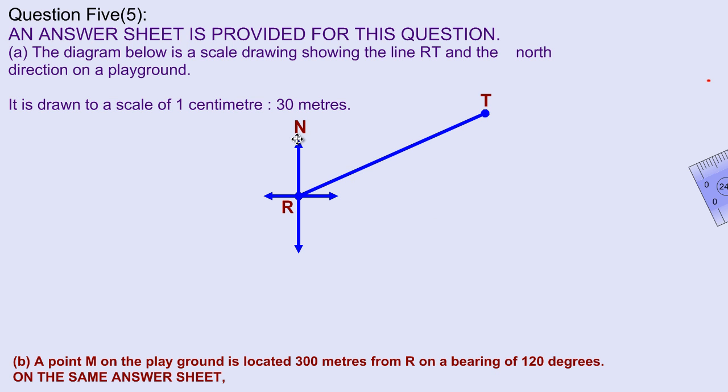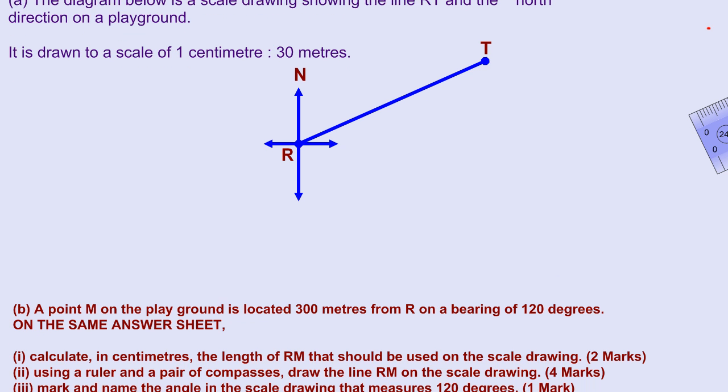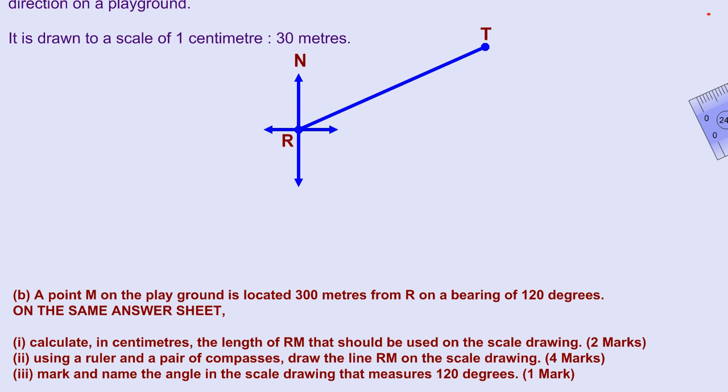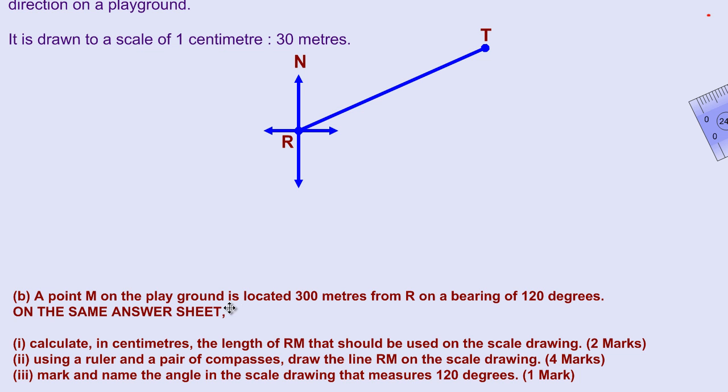Okay, my friends, in this video we're going to be completing question 5 part B. Here it states that in part B, let's just pull this up a bit so we can have a little bit more space to work with. A point M on the playground is located 300 meters from R on a bearing of 120 degrees.